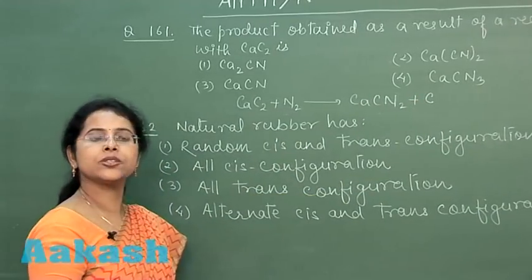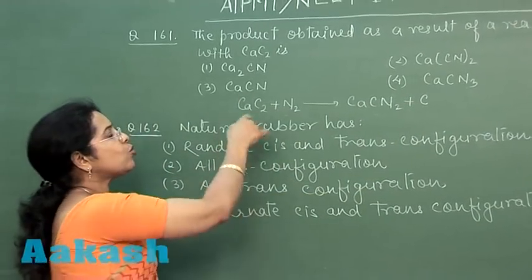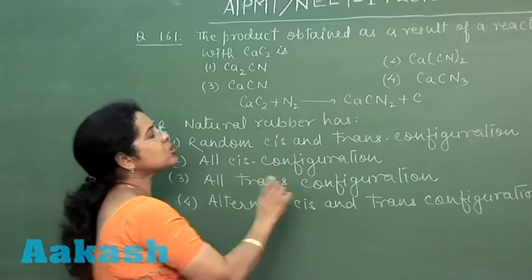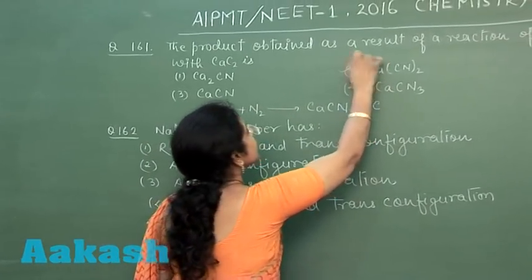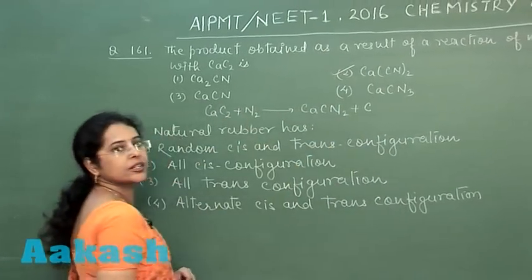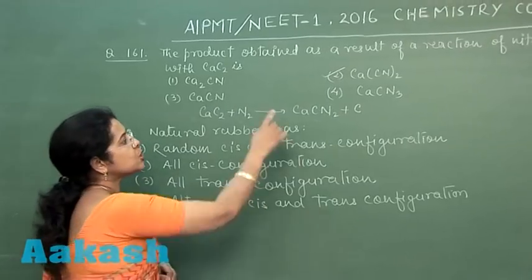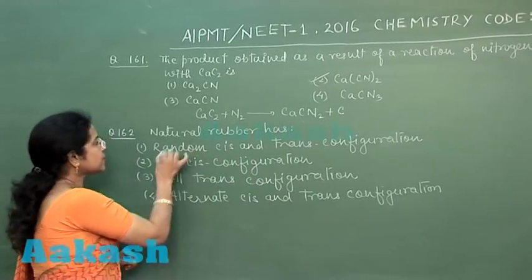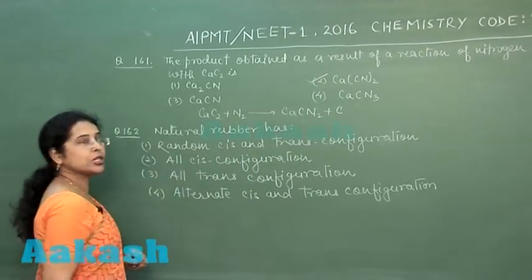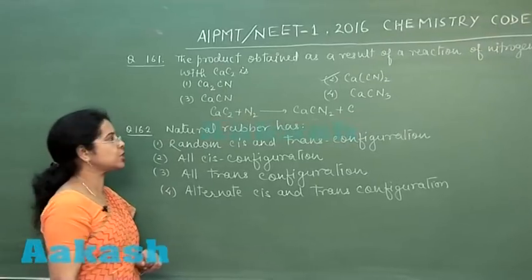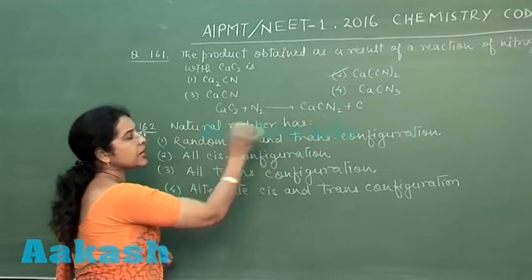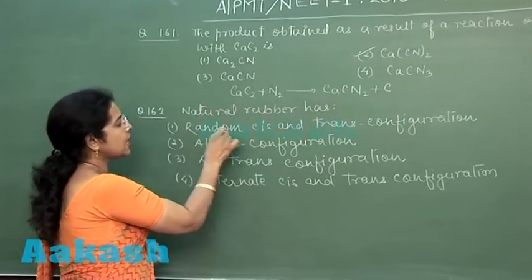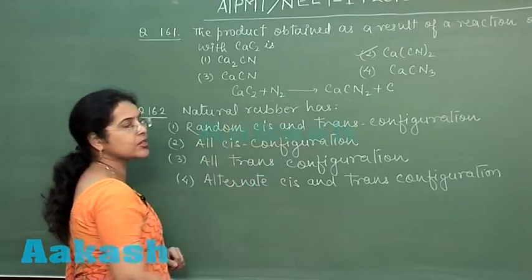This mixture is known as nitrolim. Among the four options given, the best correct answer is the second option — Ca₂(CN)₂.